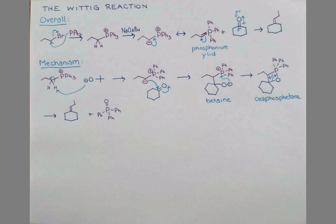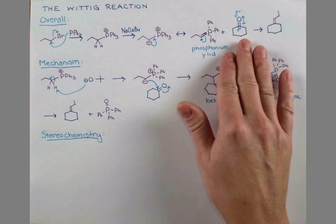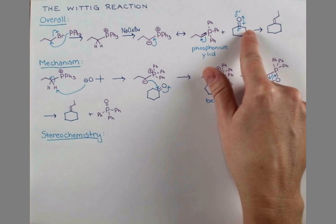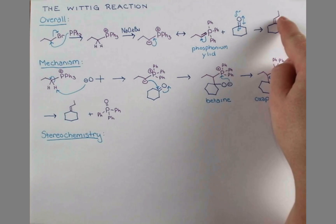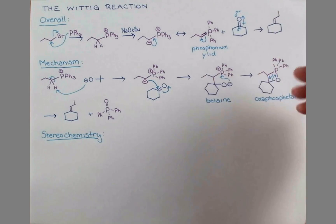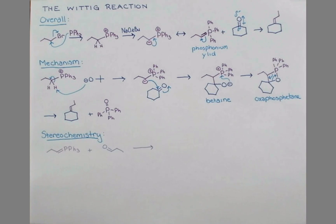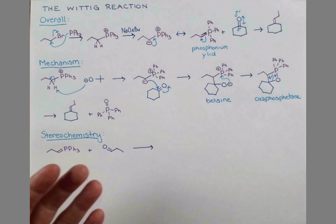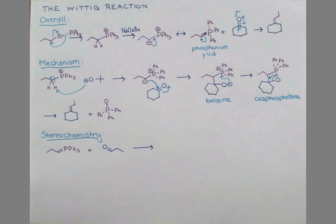There are important stereochemical considerations in the Wittig reaction as well. We first show this reaction with a ketone. And this is symmetrically substituted on both sides, so it doesn't matter if we draw the alkene going this way or this way, it's the same product. But what if we have an aldehyde here instead? Now since we only have one group on the phosphonium ylid and one group on the aldehyde, these need to be either on the same side of the alkene, Z, or they need to produce the E-alkene and be on opposite sides. The major product of this Wittig reaction is the Z-alkene.